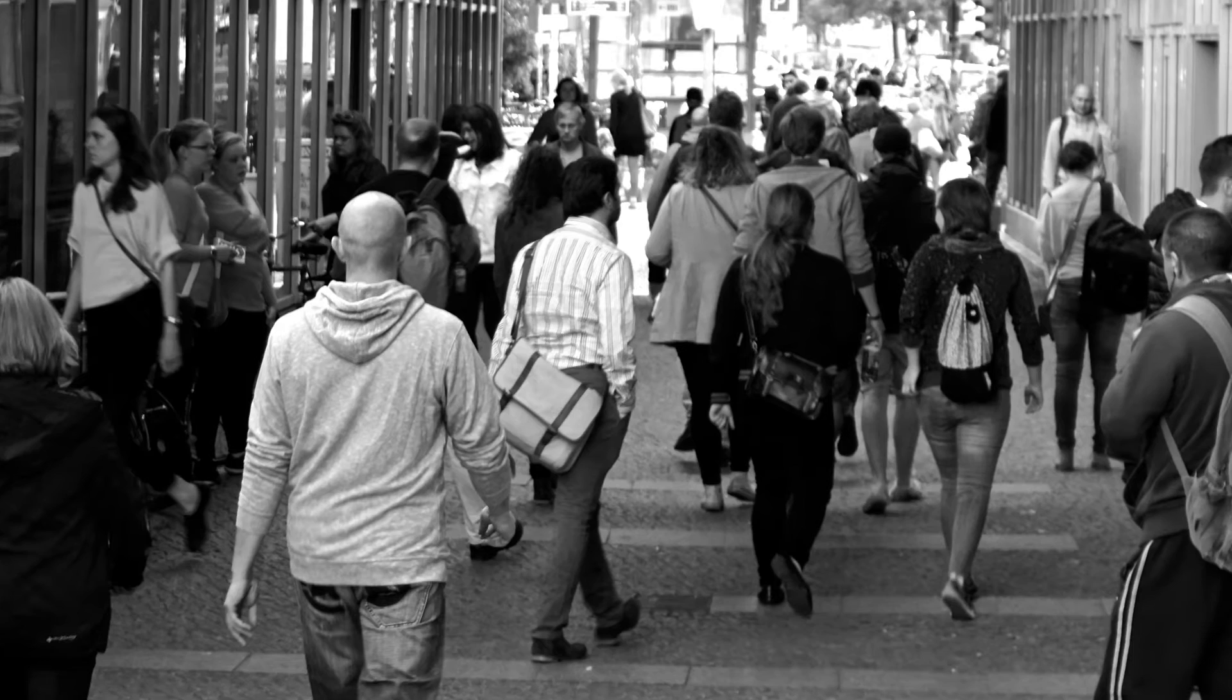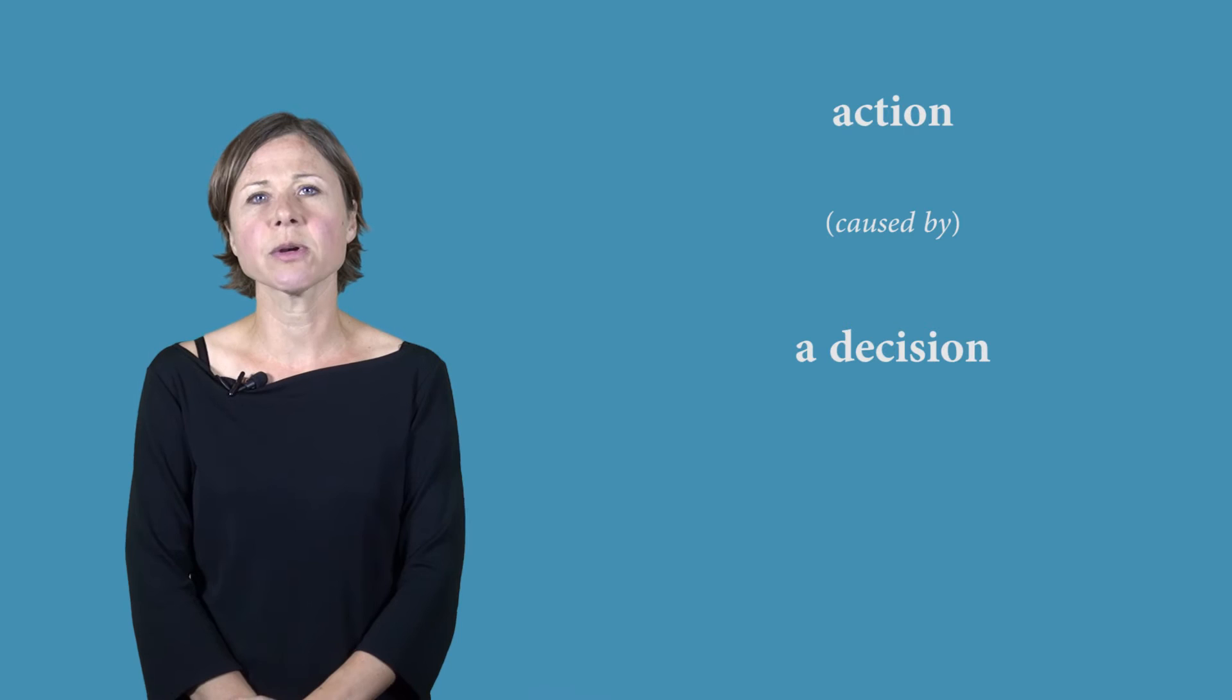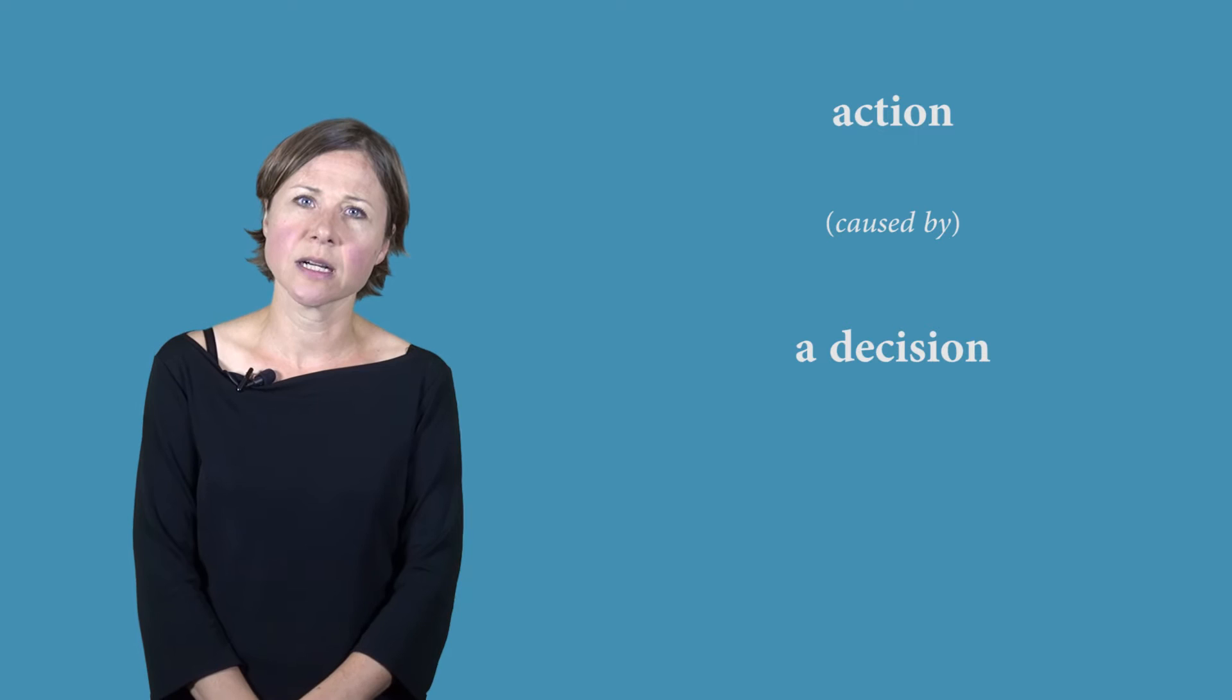It's slightly less easy to see how it applies to us. So I'm going to talk for a minute about determinism applied to people in particular. So think about the nature of human action. When I do something, so when I raise my hands like this, I've caused that action in some sense. In this particular case, I caused it by making a decision. I decided I'm going to raise my arm. And I'm going to raise my arm in order to make a point in a lecture that I'm giving about free will and determinism.